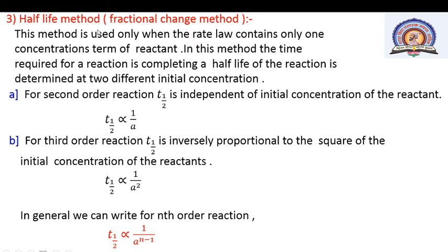The third method is the half-life method, also known as the fractional change method. This method is used only when the rate law contains only one concentration term of a reactant. In this method, the time required for completing half of the reaction (half-life) is determined at two different initial concentrations. For first order reactions, t½ is independent of initial concentration. For third order reactions, t½ is inversely proportional to the square of the initial concentration.